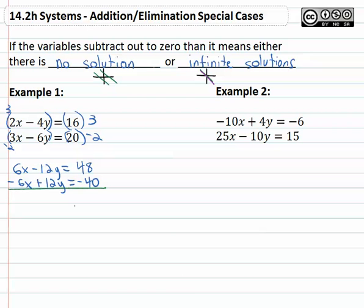And now that we have the opposites in front of the x that we wanted, 6x and negative 6x, we're ready to combine. Of course you might also notice we've got opposites in front of the y's. That's an interesting coincidence that everything subtracts out to zero. However on the other side, 48 minus 40 is 8.